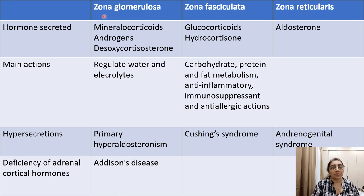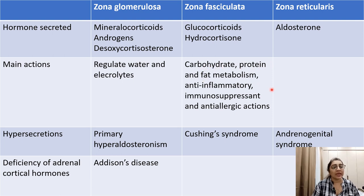Different parts of the cortex release different hormones. Mineralocorticoids are released from the zona glomerulosa and regulate water and electrolyte balance; hypersecretion causes primary hyperaldosteronism and deficiency causes Addison's disease. Glucocorticoids are released from the zona fasciculata, regulate carbohydrate, protein, and fat metabolism, and act as anti-inflammatory, immunosuppressant, and anti-allergic substances; hypersecretion causes Cushing's syndrome. Androgens are released from the zona reticularis; hypersecretion causes adrenogenital syndrome.